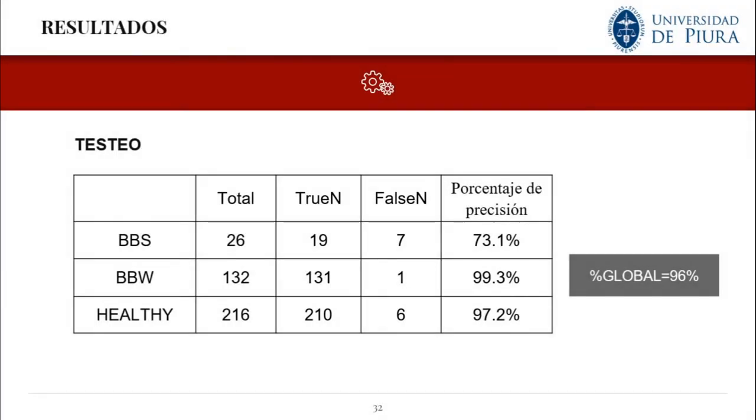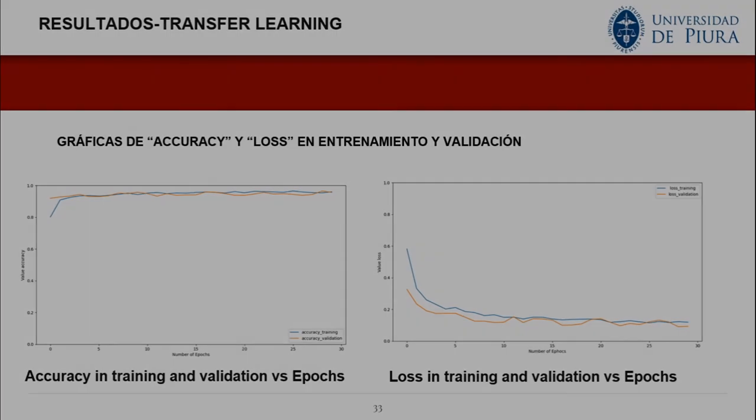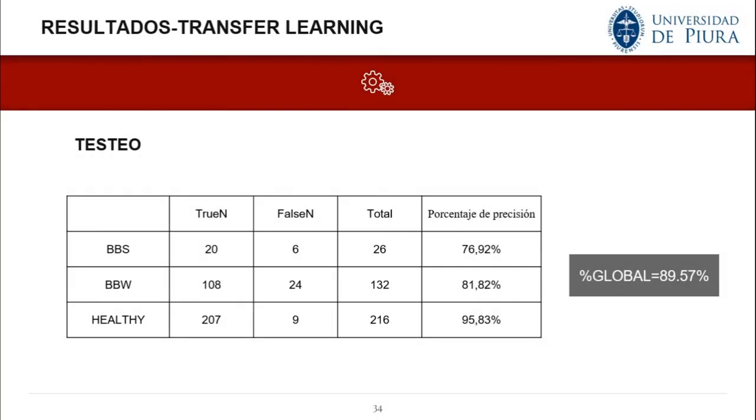The accuracy for the testing of the first neural network was 96%, and for the second network was 89.5%.